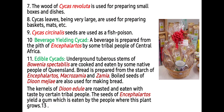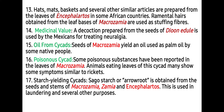As you can see in this image, Cycas circinalis seeds are used as a fish poison. A beverage is prepared from the pith of Encephalartos by some tribal people of Central Africa. The underground tuberous stem of Bowenia spectabilis is cooked and eaten by some native people of Queensland. Bread is prepared from the starch of Encephalartos, Macrozamia, and Zamia. Boiled seeds of Dioon and Metroxylon are also used for making bread. The kernels of Dioon are roasted and eaten by certain tribal people. The seeds of Encephalartos yield a gum which is eaten by people where this plant grows. Heads, mats, baskets, and several other similar articles are prepared from the leaves of Encephalartos in some African countries.